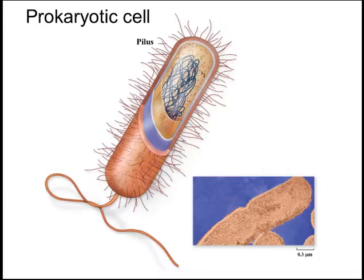Let's take a look at a prokaryotic cell. The hairs you see coming out are called pili. They're different from cilia seen in eukaryotic cells, since pili are made of just one filament, while cilia, on the other hand, are made by multiple microtubules.